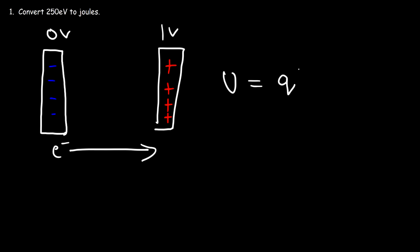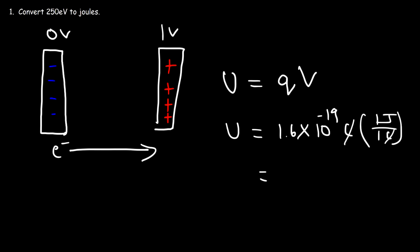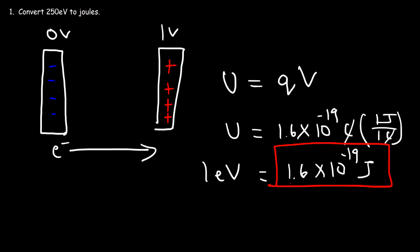The electric potential energy is equal to the product of the charge times the electric potential in volts. The magnitude of the charge of an electron is 1.6 times 10 to the negative 19 coulombs. With a potential difference of 1 volt, an electron moving through that potential difference acquires 1.6 times 10 to the negative 19 joules — and that is equal to one electron volt.